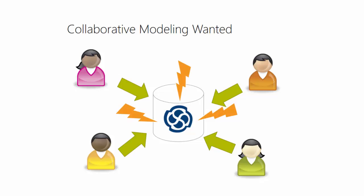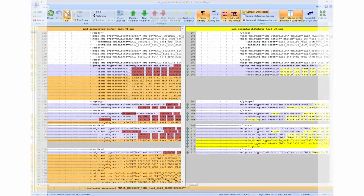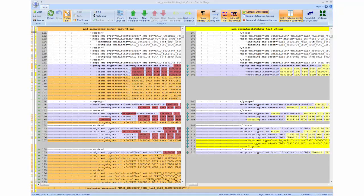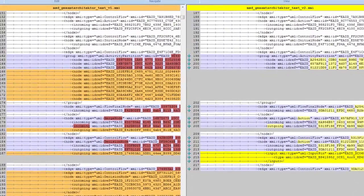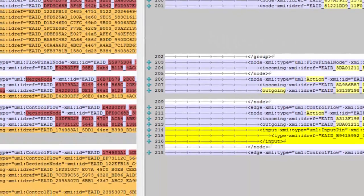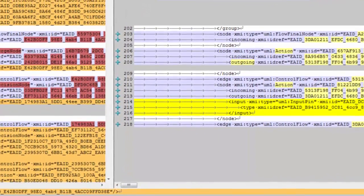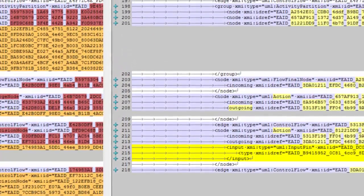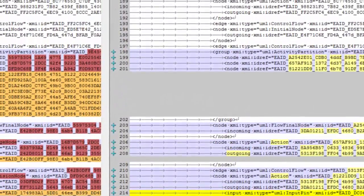You might ask yourself, okay, but conflicts can be handled by a version control system, right? Well, not really, as the traditional control version systems can handle only flat text files. Meaning, the changes are hard to understand, not to mention the difficulty to understand the intention behind the changes.